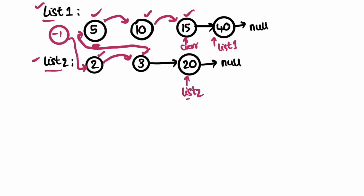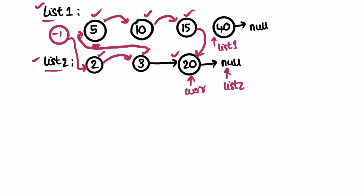Now list one has forty and list two has twenty. The minimum is twenty, so current points to twenty and list two moves forward. Current moves to the last processed element, which is twenty. Since list two is now pointing to null, we end the iteration — the while loop runs until both list one and list two are not null. Since list two is null, we directly point current to the remaining elements in list one.